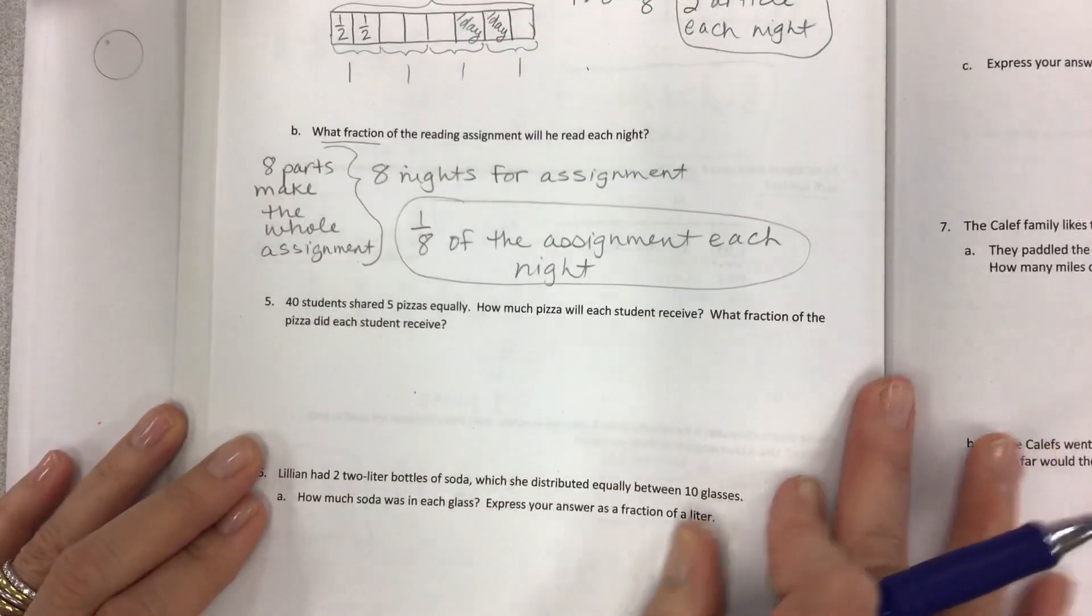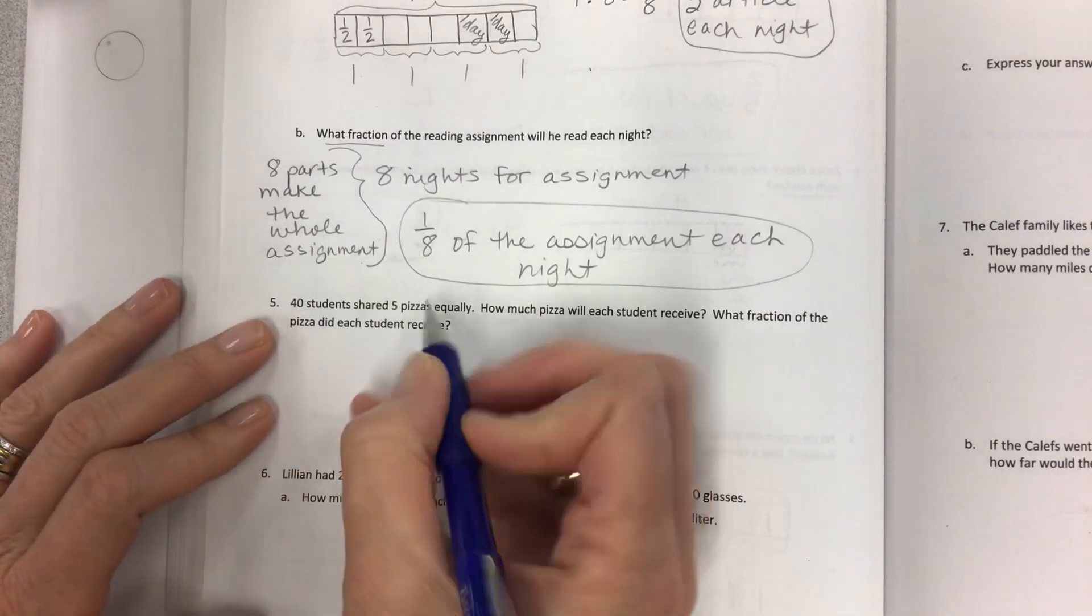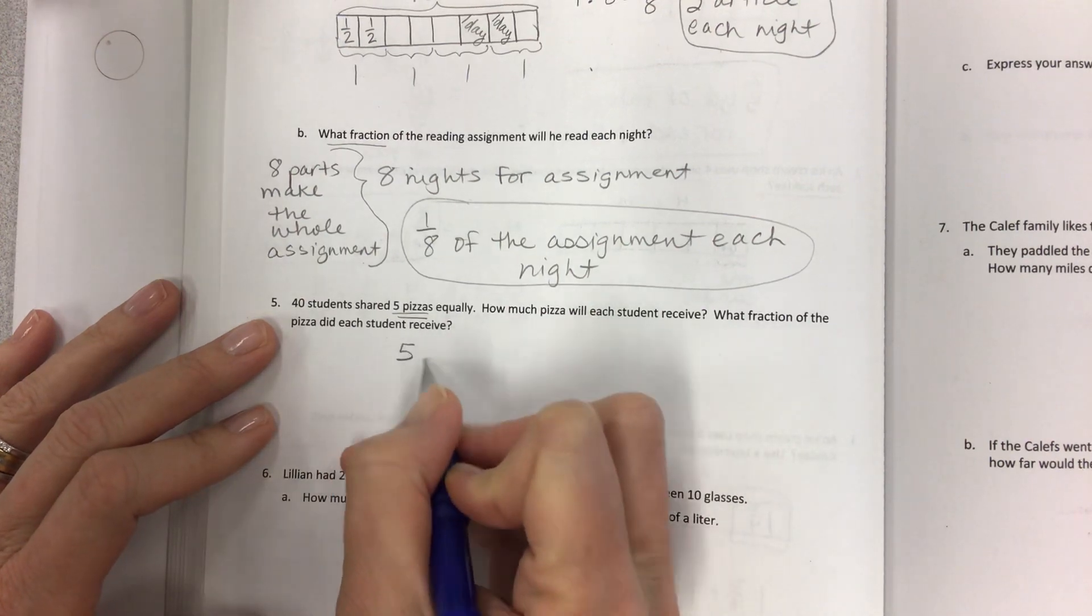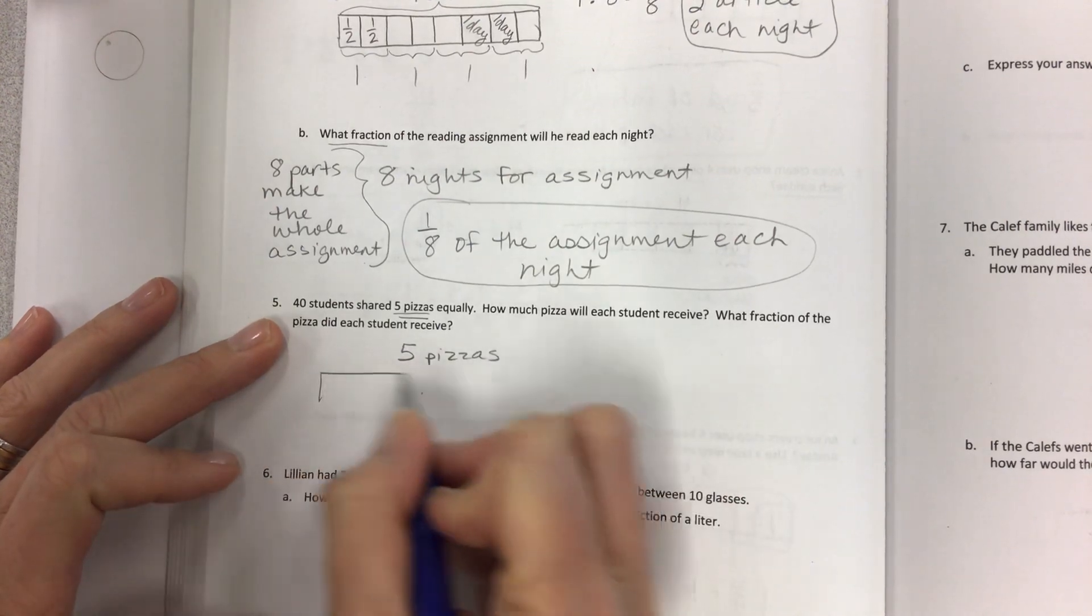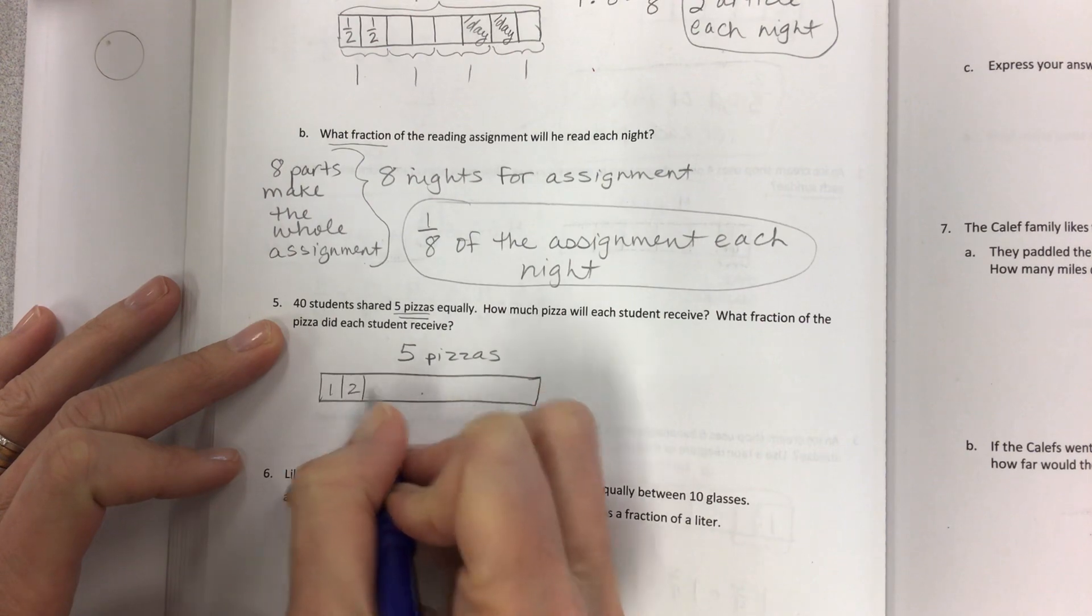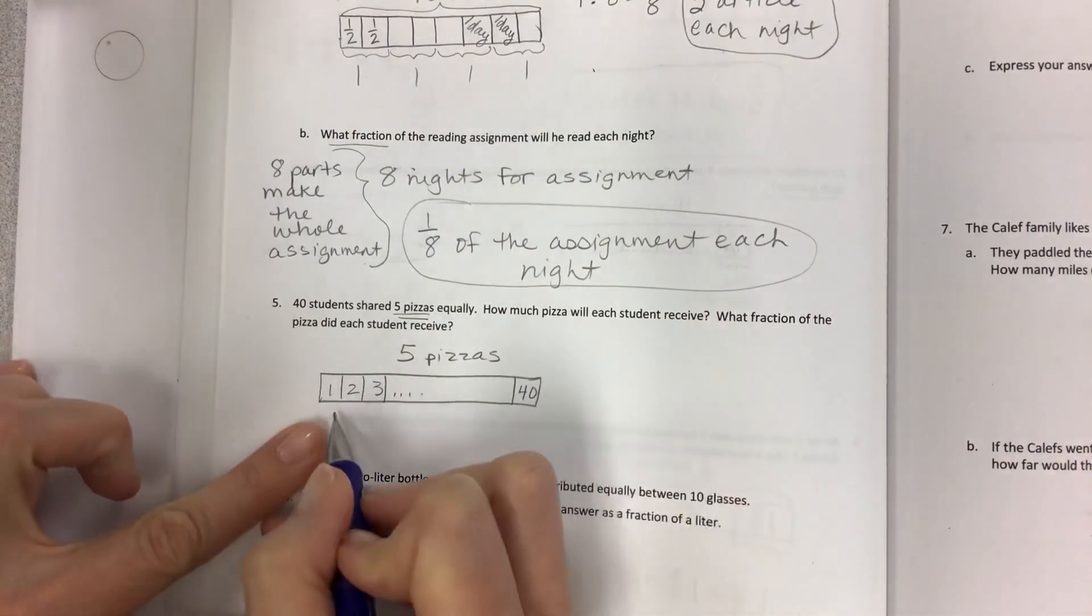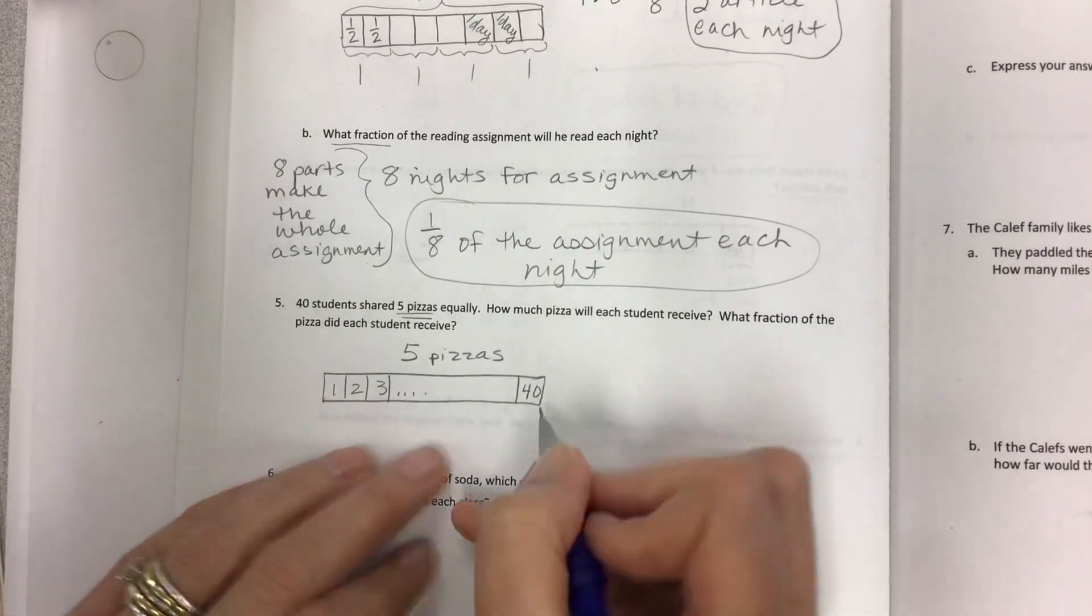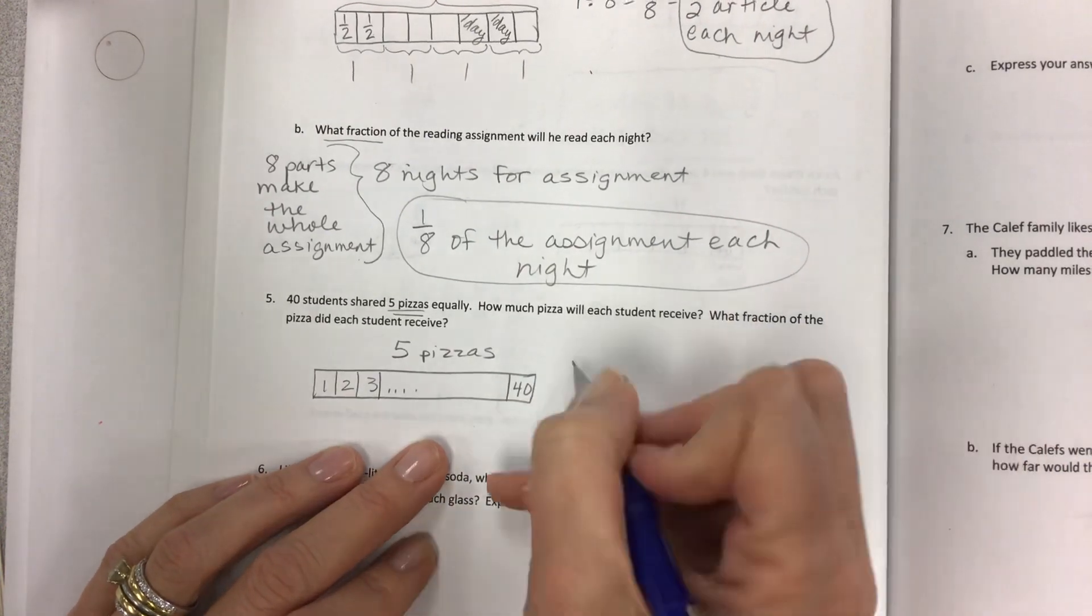Moving on away from the articles and into more food. Yes, pizza. 40 students shared five pizzas. Are there 40 pizzas? No, there are five pizzas. But they shared it equally. How nice. 40 students. Now, remember when I did the one, two, three, dot, dot, dot, dot, 40 kids. So that's what you can do when you have so many and you don't want to make all these parts. Just know that there are 40 students.